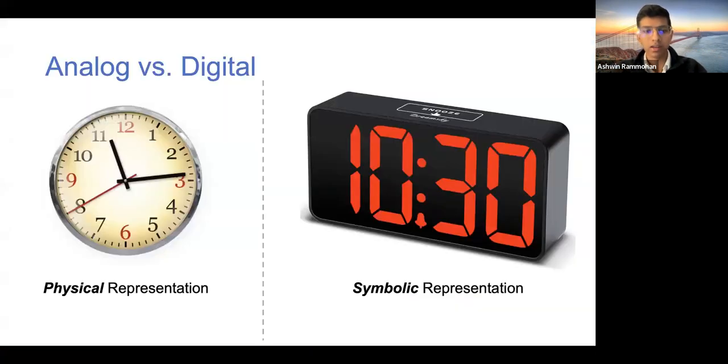So to begin, I want to explain what exactly does analog mean? What does digital mean? And we can very easily think of just what an analog watch or clock means versus a digital watch or clock. But I want to specify two ways we can really differentiate these two words.